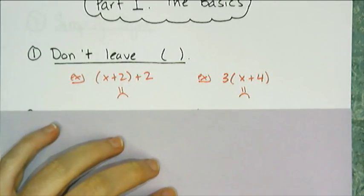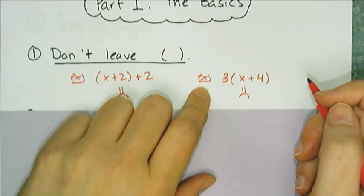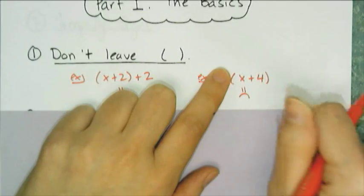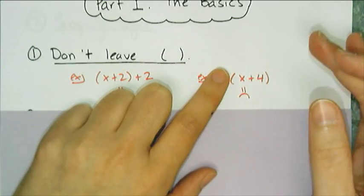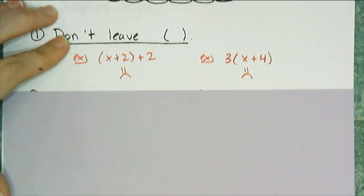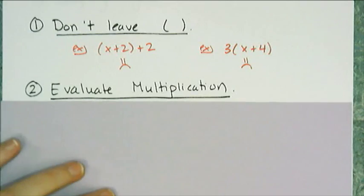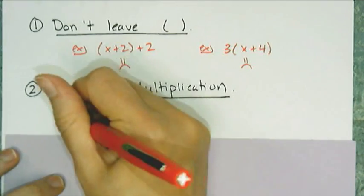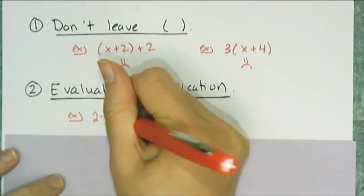Later in the year, when we're in quadratics, I'll replace that 3 with an exponent, and once again you can't leave the parentheses — there's a different way to deal with that. The second thing we need to talk about is the evaluation of multiplication: it must occur, so you have to evaluate your multiplication. I don't want to see an expression like 2 times 3 left unevaluated.